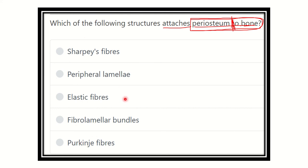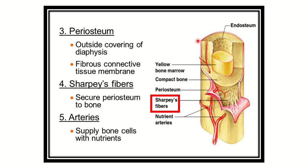Here we can see the bone, and the outer part is the periosteum. The periosteum and bone are connected by a fibrous structure. This structure is the Sharpey's fiber, which connects the bone with the periosteum.